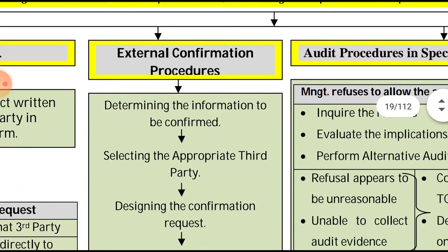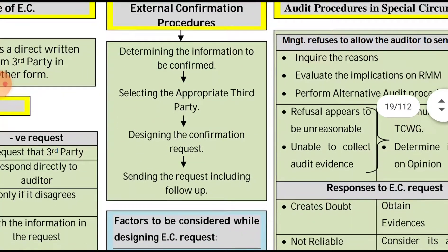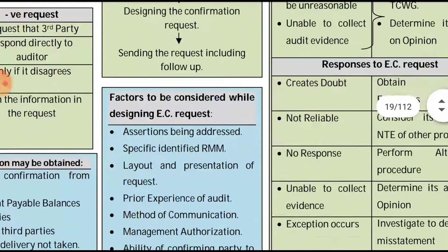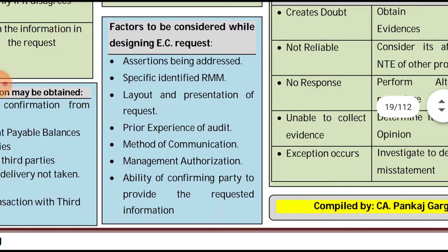The external confirmation procedure involves the following steps: first, the auditor determines the information to be confirmed; second, selects the appropriate third party; third, designs the confirmation request; and fourth, sends the confirmation request including any necessary follow-up. Regarding designing the request, there are specific factors the auditor must consider.